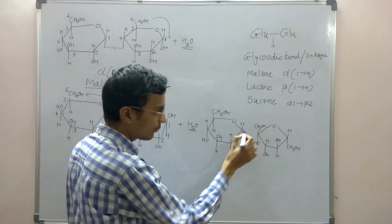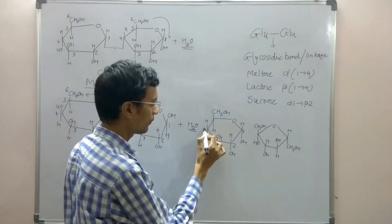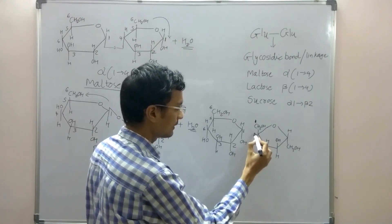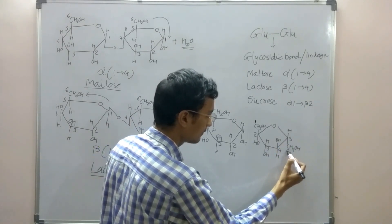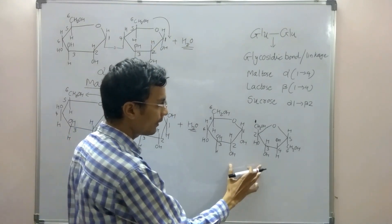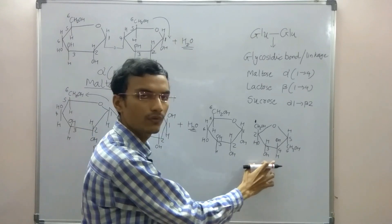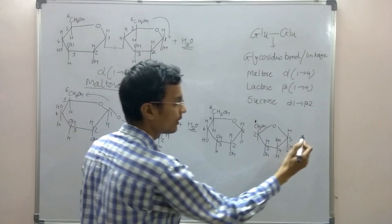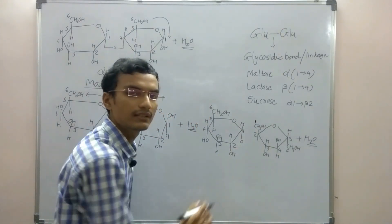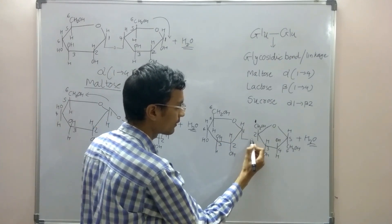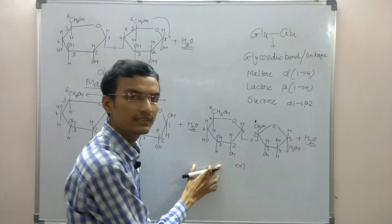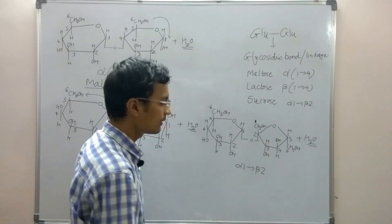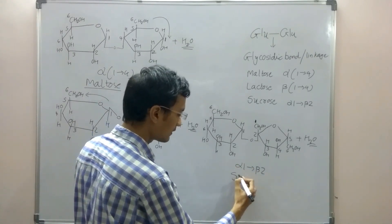This is the first carbon of the glucose molecule, followed by the second, third, fourth, fifth, and sixth. The first carbon of the fructose molecule is here, followed by the second, third, fourth, fifth, and sixth. The bond is formed between the first carbon of the glucose molecule and the second carbon of the fructose molecule. One hydrogen from glucose and one hydrogen and one oxygen from fructose are removed in the form of H2O, and this oxygen is involved in bond formation. This bond is known as alpha-1 beta-2 because glucose is in alpha configuration and fructose is in beta configuration. This is the structure of sucrose.